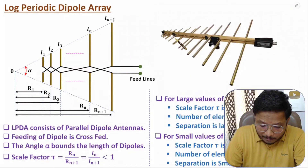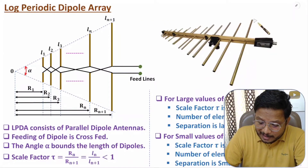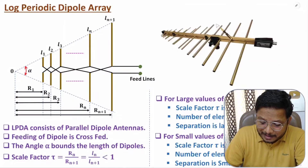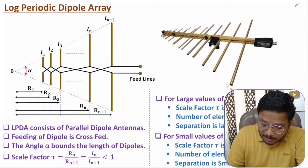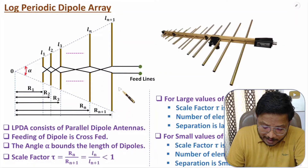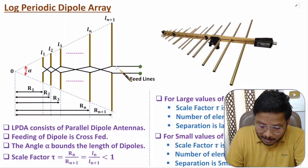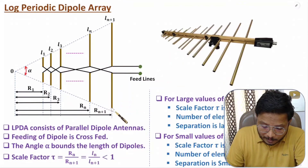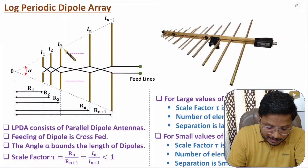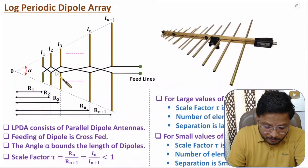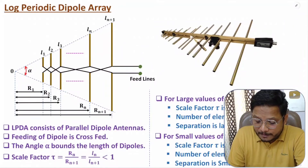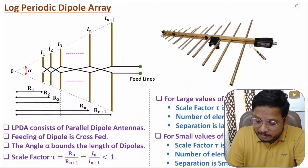Looking at a real example of a log periodic dipole antenna, the dipole at one end has the highest length, and as you move in the other direction the length decreases, and the spacing decreases as well. For the feeding mechanism, we have a transmission line or feed lines connected to each dipole with a cross-feed arrangement. There are two pipes — upper and lower — and dipoles are connected with a cross-feed between consecutive elements.